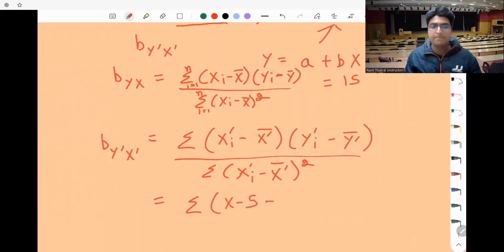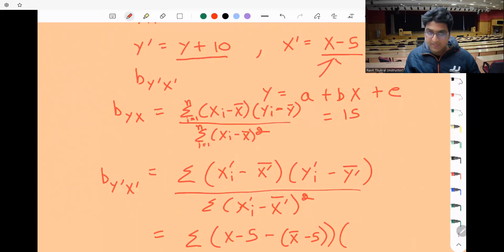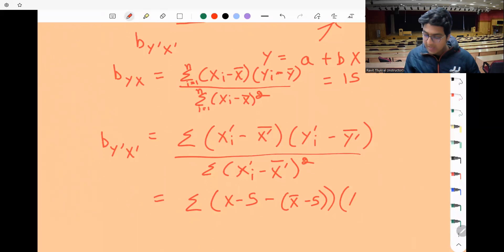Minus the mean, which will be X̄ - 5. Same thing goes for Y': this is Y+10 minus the mean. The mean will increase by 10 units, so this will be Ȳ + 10.